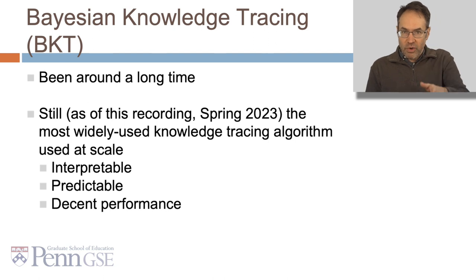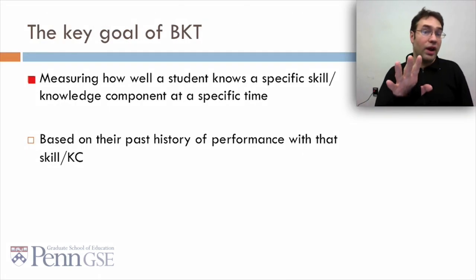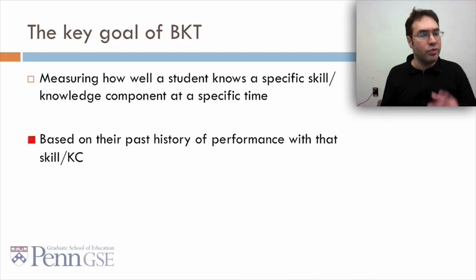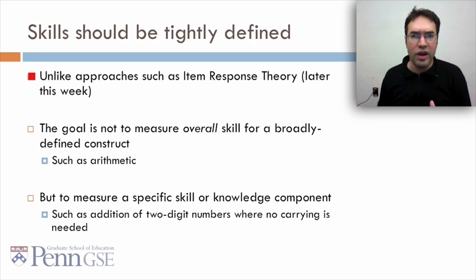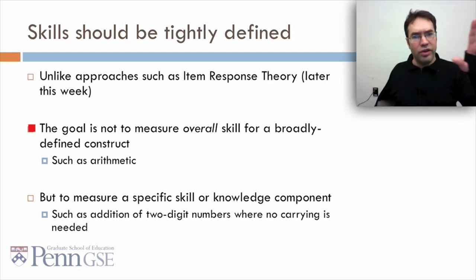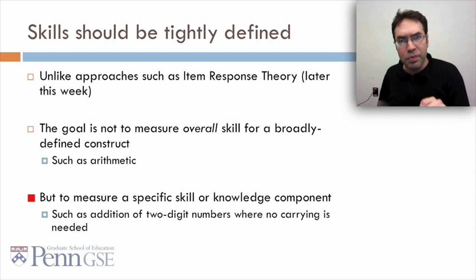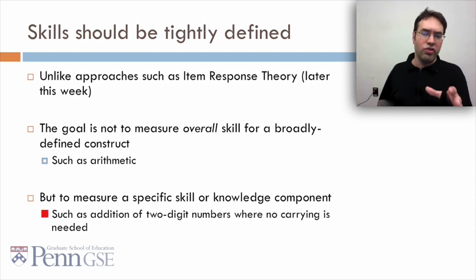Still, as of this recording in spring 2023, it's still the most widely used knowledge tracing algorithm used at scale. That's because it's interpretable, its performance is very predictable, and although its performance isn't as good as really any of the modern alternatives, it still achieves good enough performance for a lot of real-world tasks. The key goal of BKT is to measure how well a student knows a specific skill or knowledge component at a specific time based on their past history of performance with that skill or KC. The skill should be tightly defined. Unlike approaches such as item response theory, the goal is not to measure overall skill for a broadly defined construct such as arithmetic, but to measure a specific skill or knowledge component, such as the addition of two-digit numbers where no carrying is needed.